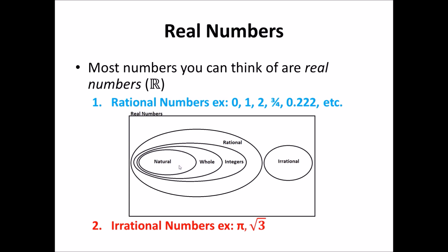Rational numbers are what you see on the left-hand side of this diagram involving natural, whole, and integer numbers. Examples are 0, 1, 2, 3 quarters, 200, 22 thousandths, etc.